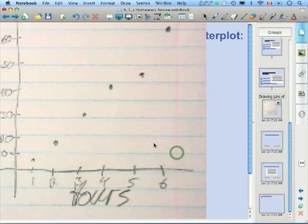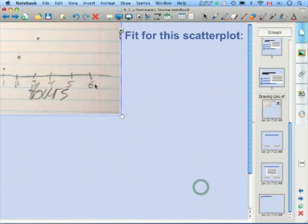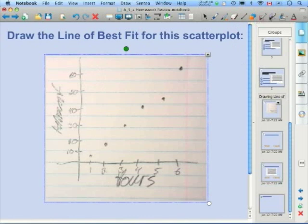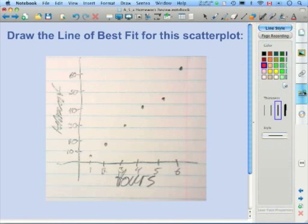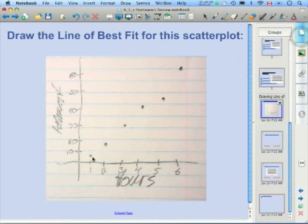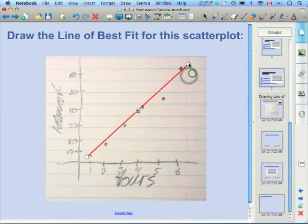And I'm going to copy this and paste it and resize it. Because I want a student from the class to come up and draw what they would think would be the line of best fit. So, I'll use my shape recognition tool. And I'll change the color to red. And a student will come up on the board and draw what they think is the line of best fit.